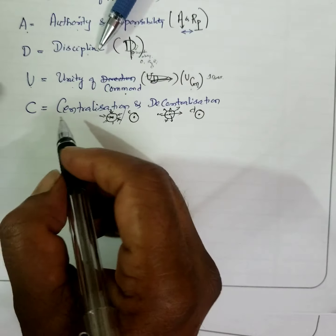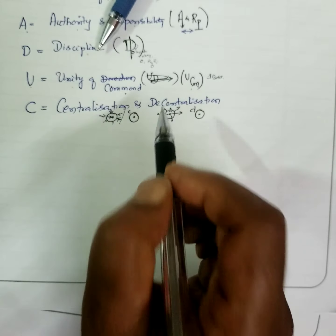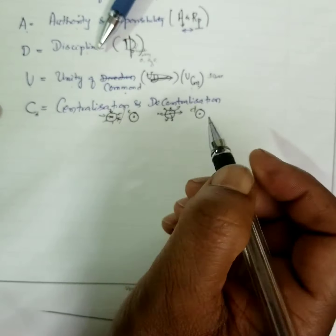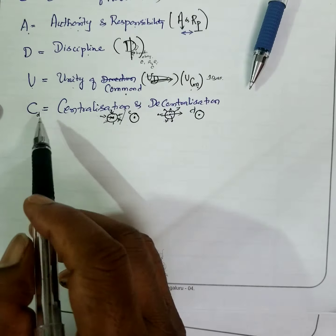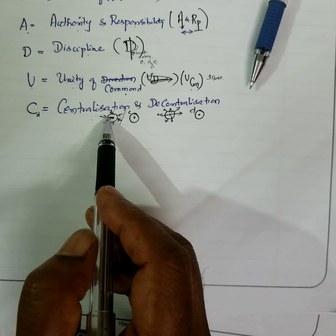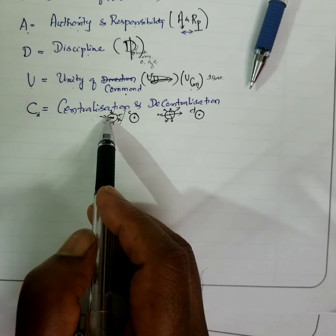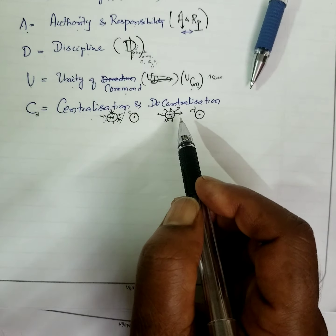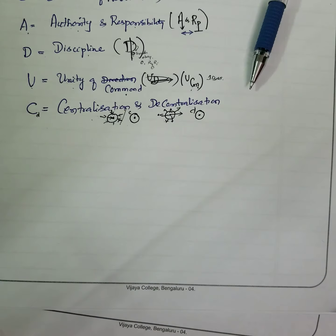C for centralization and decentralization. You can write C and D to remember. Centralization means making the power in hands of one, and decentralization means decision making power among more than one person.